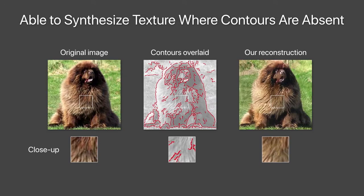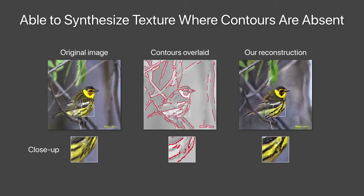We also show results on dogs and birds, trained on dogs and birds databases, respectively. The results show that our model learns to properly hallucinate natural texture and structure, such as the fur of the dog, even in large regions where no input information is provided. For this bird example, continuous stripes of the feather patterns were hallucinated even though the input contours are sparse and discontinuous. The output is plausible, even though it does not match the original input.